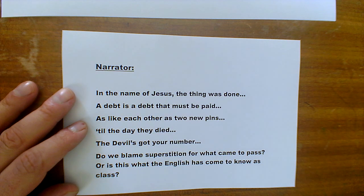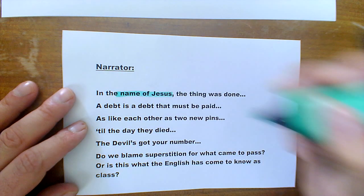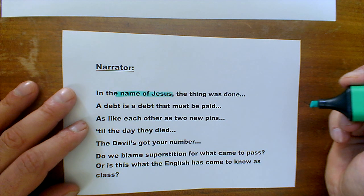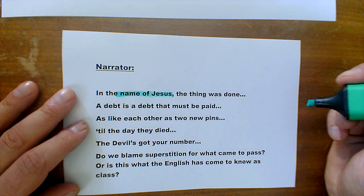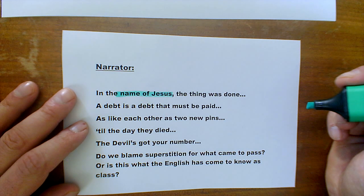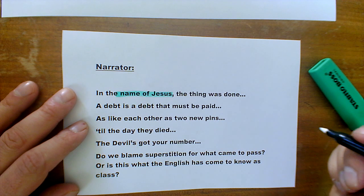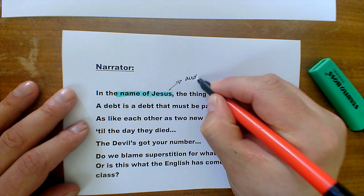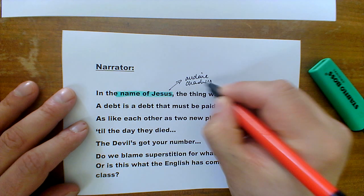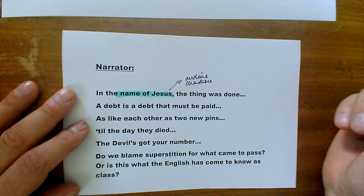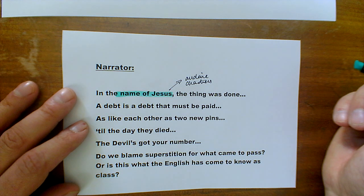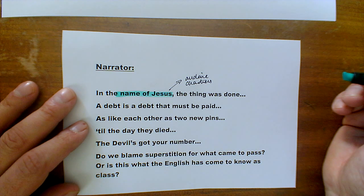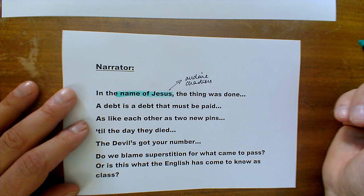Some of the quotes that spring to mind with the narrator: he talks about the threat of Jesus and the devil and religious retribution — the idea that he's an omnipotent character, all-seeing and all-knowing, who knows the inner secrets and desires of all the characters on stage. He says 'in the name of Jesus, the thing was done,' reaching out with religious views that the audience and characters would relate to, given the Irish Catholic backgrounds of many working-class people in Liverpool.